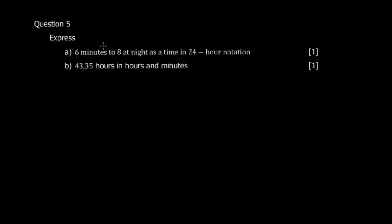Question 5 says express 6 minutes to 8 at night as a time in 24-hour notation. Six minutes to 8 would be 7:54 pm. But in 24-hour notation, you increase this by 12, so this becomes 19:54. If it's pm, you increase by 12 always.